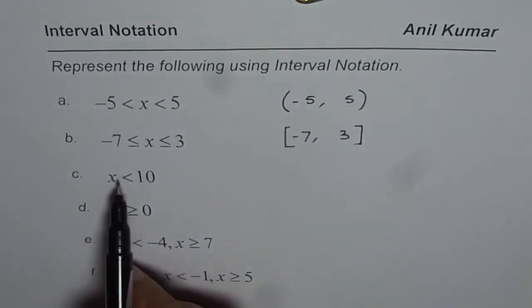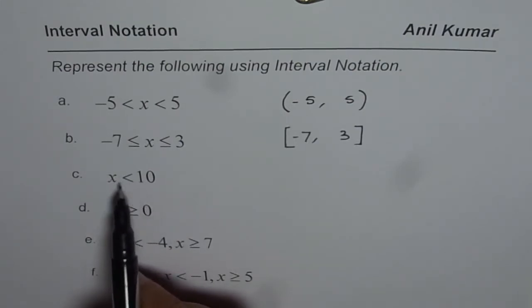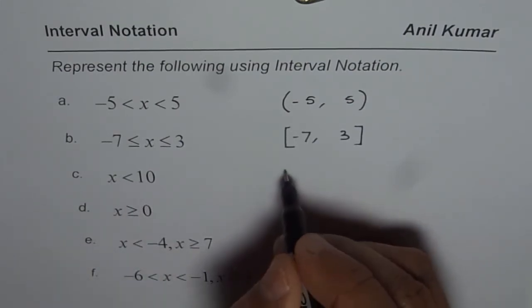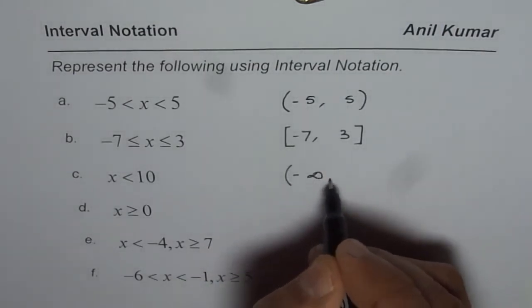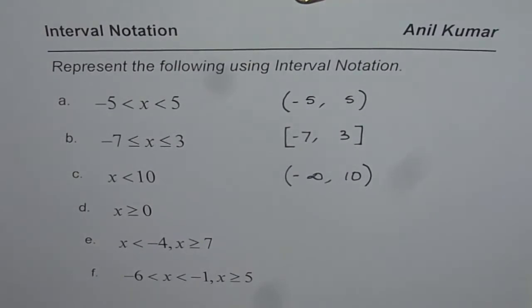Now, we have x is less than 10. Less than 10 means it could go up to negative infinity, which can never be included. So it is negative infinity to 10. 10 is also not included, so open brackets.